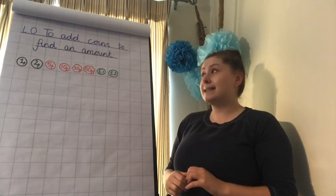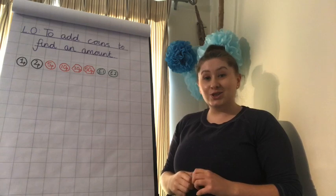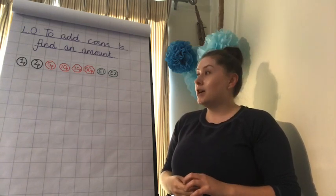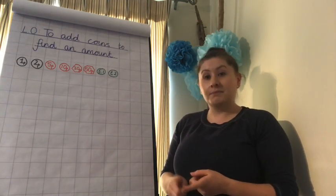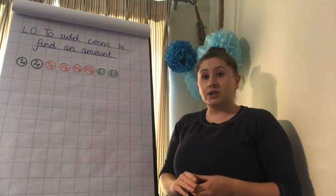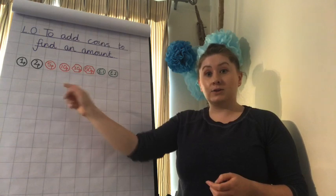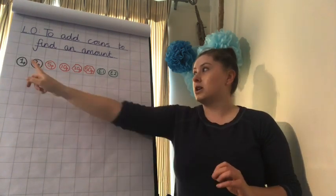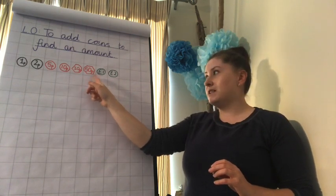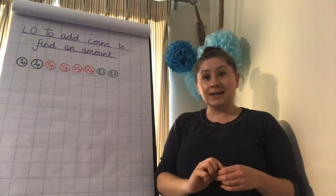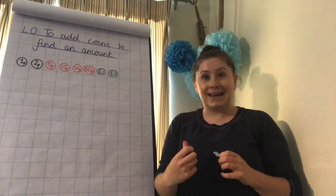Right then, Year 3. For maths today, we're going to add coins to find an amount. The first thing I'd like you to do is go and get the resources you'll need for this lesson. You're going to need something to write with, a pencil, something to write on or in, maybe one of your yellow books that we sent home. And I'd like you to go and find some coins from around your house — 1p, 2p, 5p, 10p, 20p, 50p, £1, £2. Pause the video now and go and see what coins you can find. I'll go and do the same. See you in a few minutes.